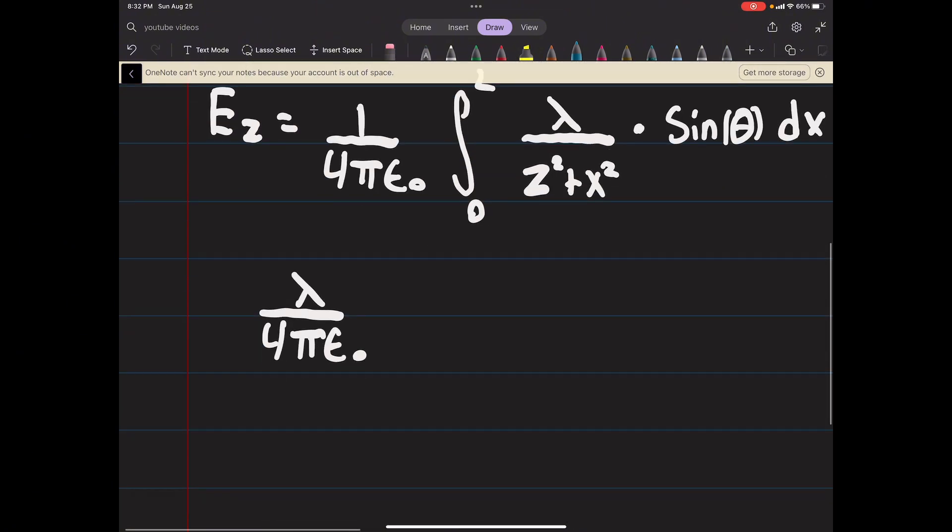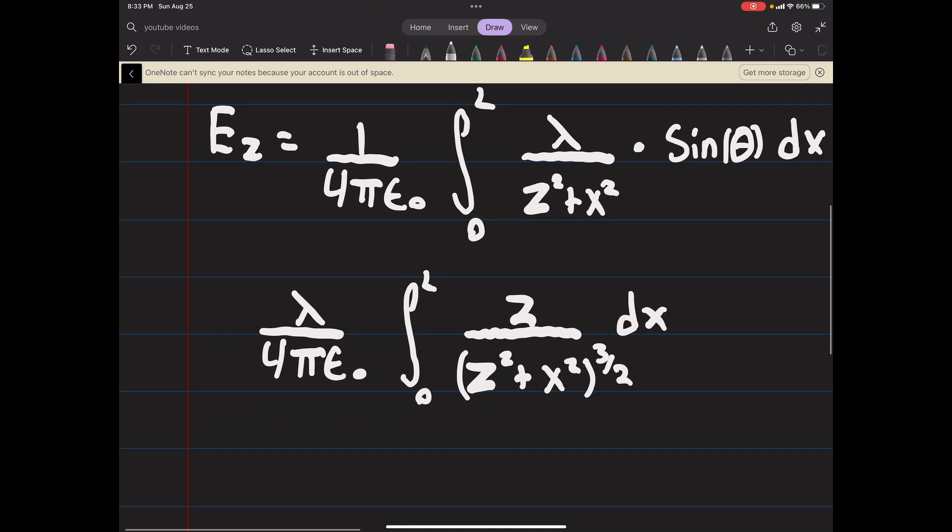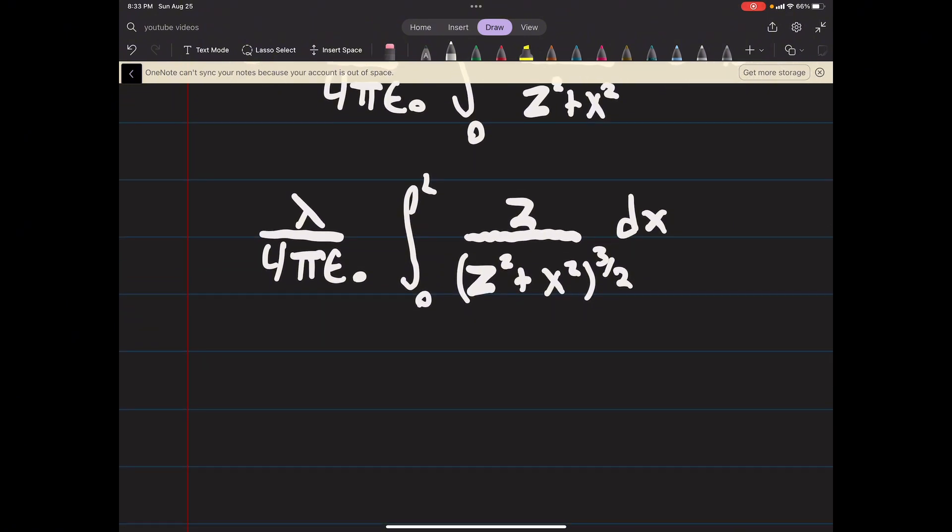We can substitute that in so we have the integral from 0 to L, 1 over z squared plus x squared to the three halves, and then we'll have another z here, dx. Now we can integrate this.